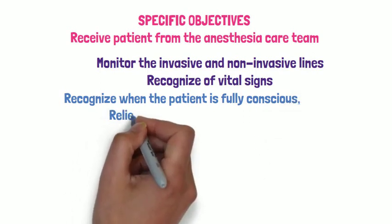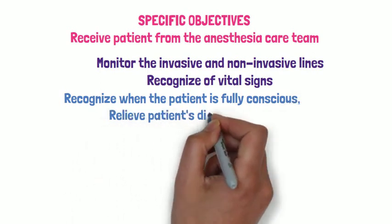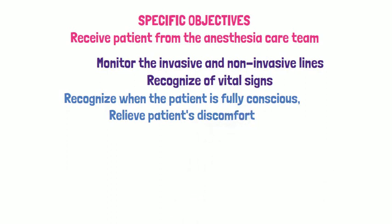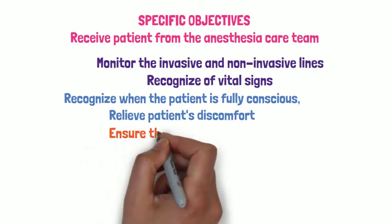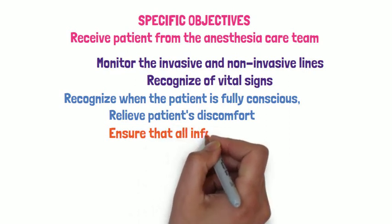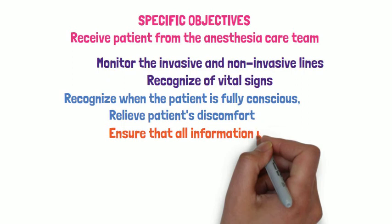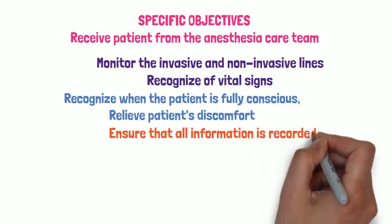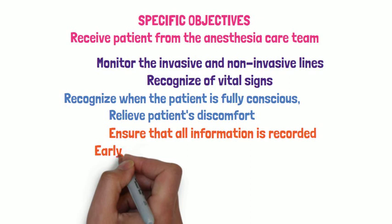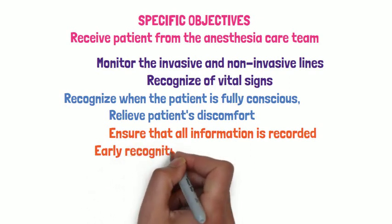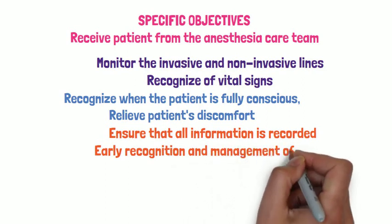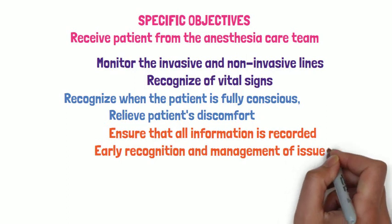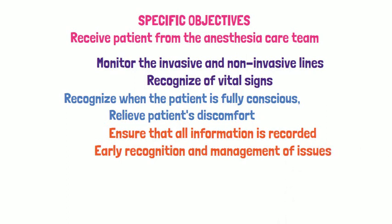If any abnormality is noted, the supervising team must be informed immediately. All catheters should be draining and urine output should be checked for colour and quantity. Patients after abdominal surgery may start bleeding internally, and in such cases the patient may have hypotension, hypoglycemia, or respiratory depression. The supervising team must be informed immediately and action taken as per instructions.